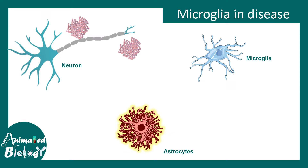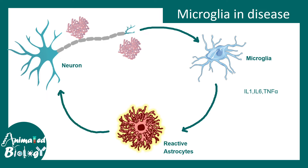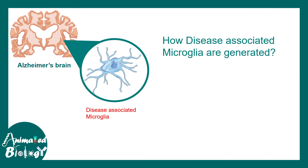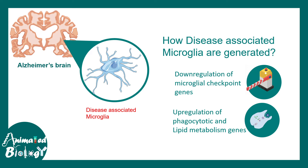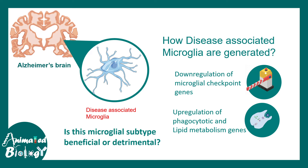As mentioned previously, microglia and astrocytes communicate in the Alzheimer's brain: plaques trigger microglia to release pro-inflammatory cytokines, converting astrocytes into reactive ones, creating a vicious cycle. Recent research has also found specific disease-associated microglia in the Alzheimer's brain, generated due to downregulation of microglial checkpoint genes and upregulation of phagocytic and lipid-associated genes. Whether these disease-associated microglia are detrimental or beneficial is still unknown.